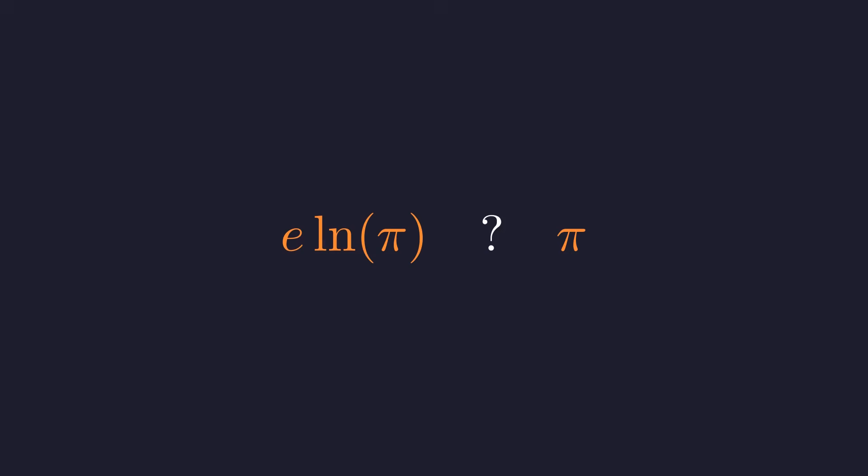Now, here's where things get interesting. If we divide both sides by e times pi, we'll put both sides into the same form, which will reveal a beautiful pattern underneath. And look what we get. The natural log of pi over pi on the left, and 1 over e on the right.